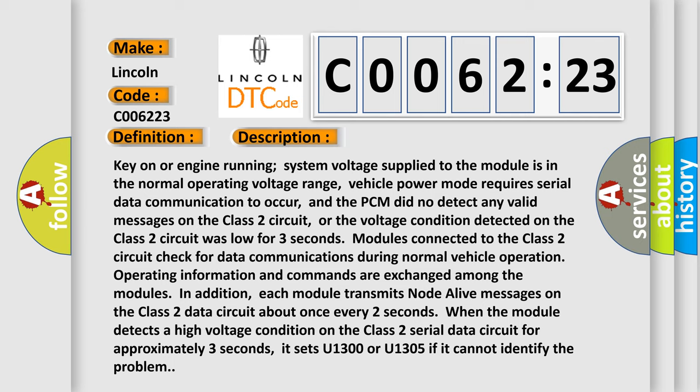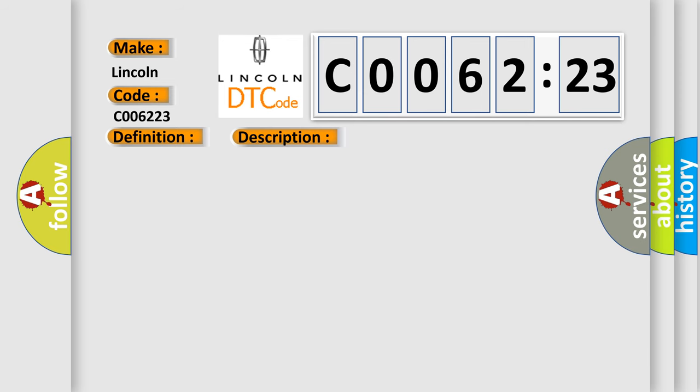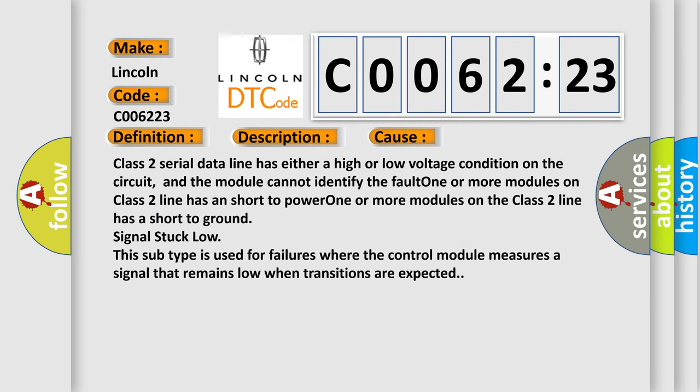This diagnostic error occurs most often in these cases: Class 2 serial data line has either a high or low voltage condition on the circuit, and the module cannot identify the fault. One or more modules on Class 2 line has a short to power. One or more modules on the Class 2 line has a short to ground signal stuck low. This subtype is used for failures where the control module measures a signal that remains low when transitions are expected.